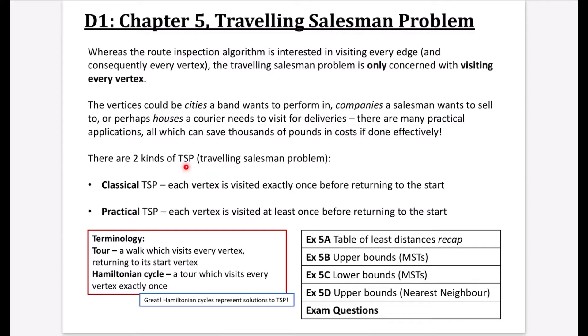Because there are obviously many practical applications, all of which can save thousands of pounds in costs if done effectively. So there are two kinds of traveling salesman problem, which I'll just use as TSP to kind of save some typing and some writing. The classical TSP is where each vertex is visited exactly once before returning to the start. And then the practical TSP is where each vertex is visited at least once before returning to the start.